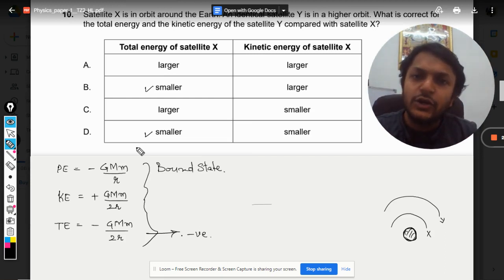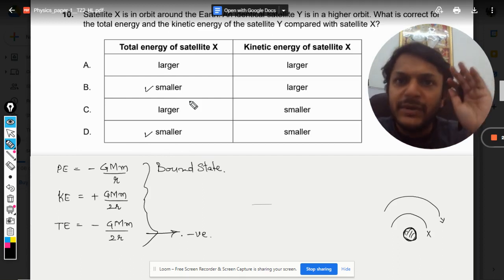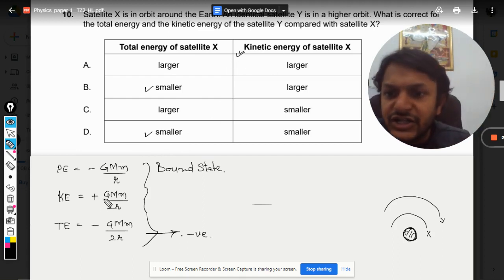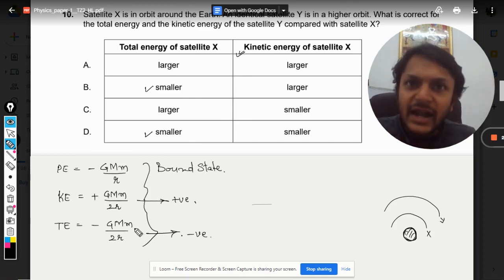And when it goes to infinite distance—that is, it frees itself from the gravitational field of a planet—the total energy becomes zero. So zero is the maximum value; otherwise, all the values are negative. So either the answer will be B or the answer will be D.